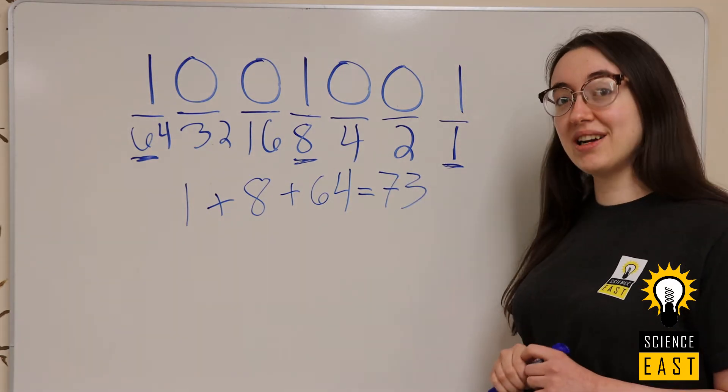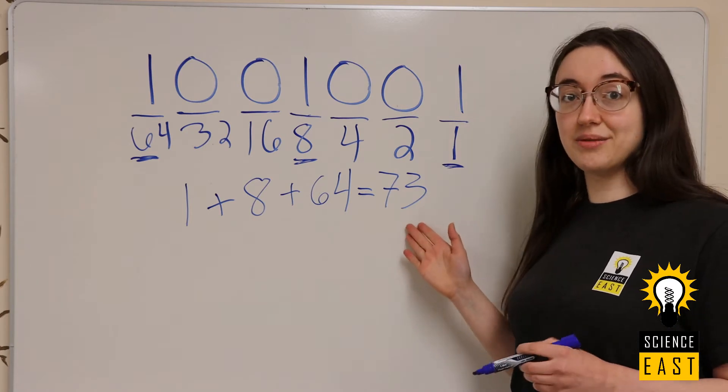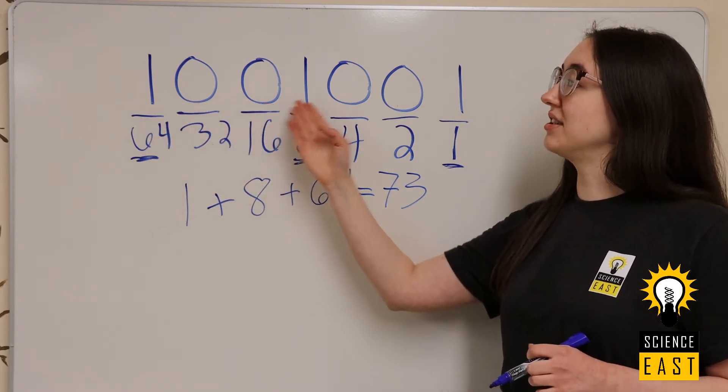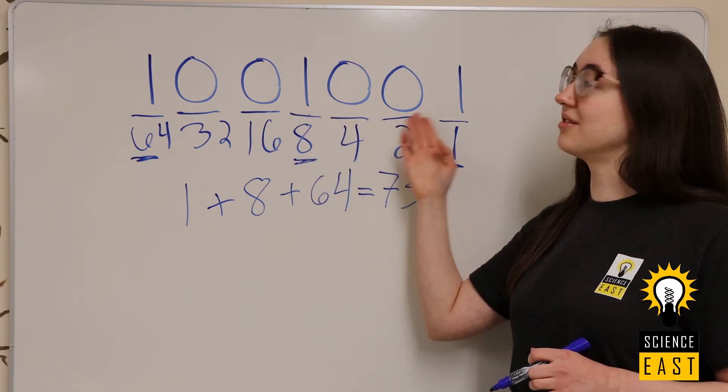And so in binary code, the number 73 is represented by the digits 1, 0, 0, 1, 0, 0, 1.